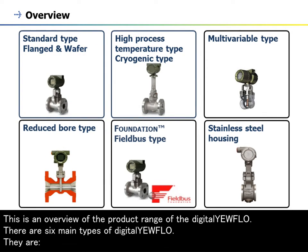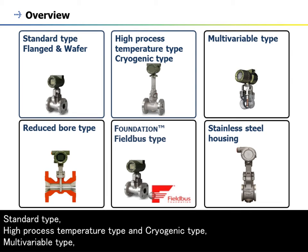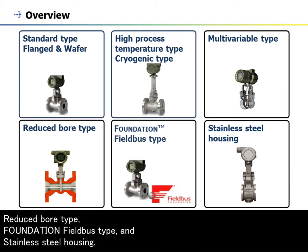This is an overview of the product range of the Digital Yewflow. There are six main types: Standard Type, High Process Temperature Type and Cryogenic Type, Multivariable Type, Reduced Bore Type, Foundation Fieldbus Type, and Stainless Steel Housing.